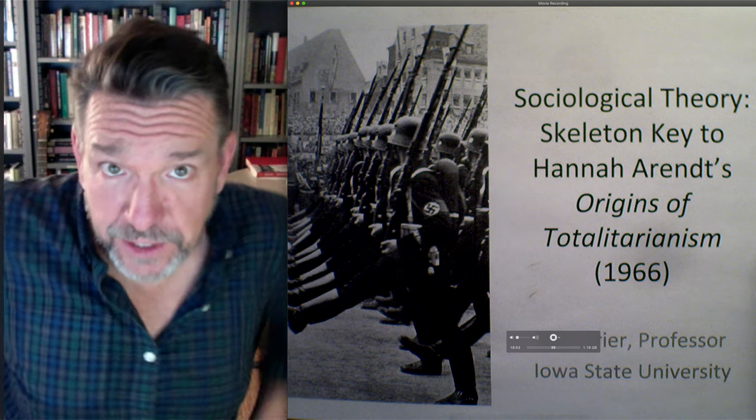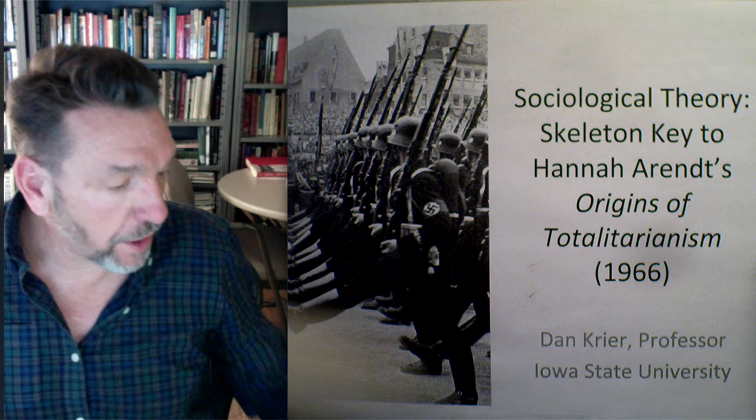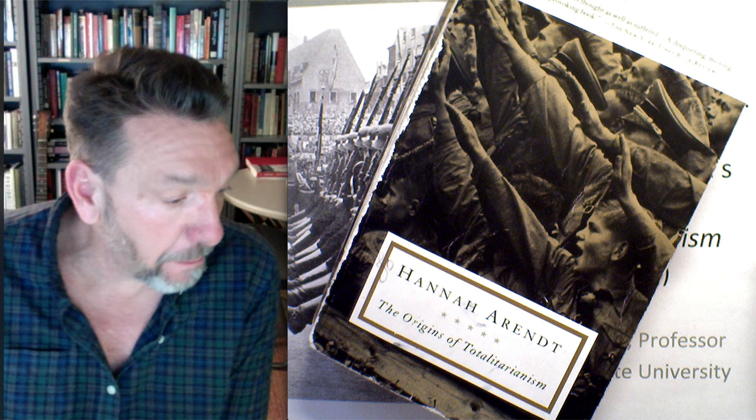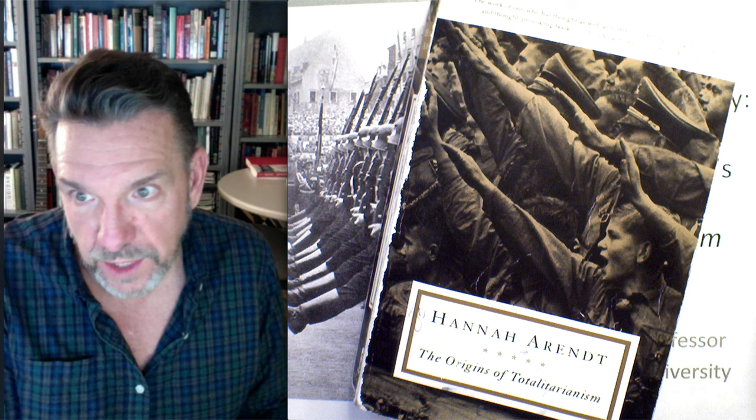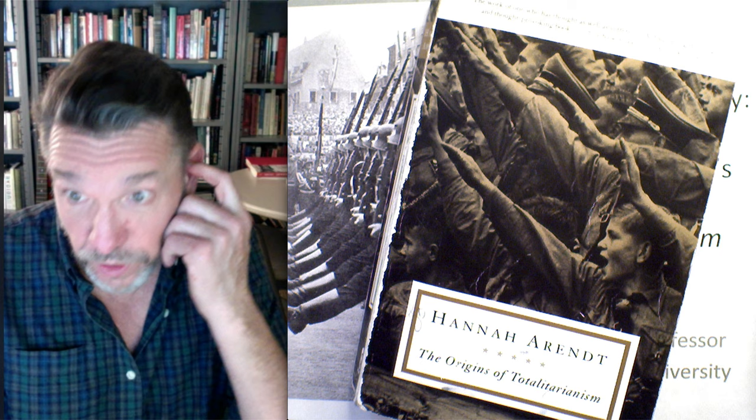This is part of a series of sociological theory lectures recorded after coronavirus. Tonight's lecture is on Hannah Arendt's The Origins of Totalitarianism. The book first came out in 1950; the copy used with students is the 1966 third edition. It includes updates where she writes more extensively about the Soviet gulag system, going beyond just totalitarianism in Nazi Germany to look at other regimes.